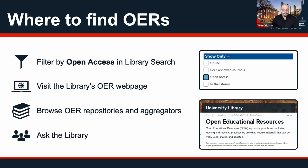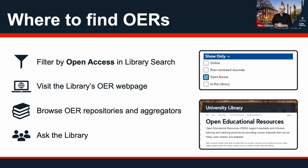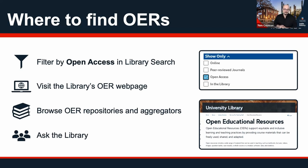And finally, you can ask the library. You can always email me or email the learning support team. We also have a form embedded within that page that allows you to provide details if you have a particular textbook that you want to replace with an open resource — you can put in the details and get some help from our team to find an alternative.